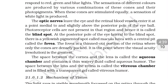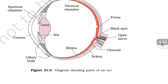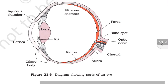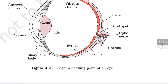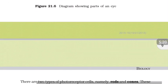The optic nerve leaves the eye and the retinal blood vessels enter it at a point medial to and slightly above the posterior pole of the eyeball. As seen in the diagram, the optic nerve and blood vessels enter at this point. Just in front of this point is the blind spot, which does not contain any photoreceptor cells. Just above it is a point called the fovea.